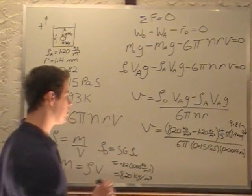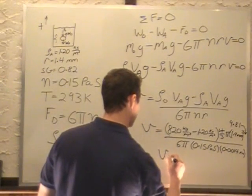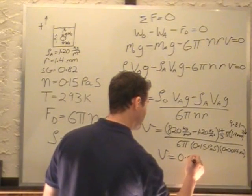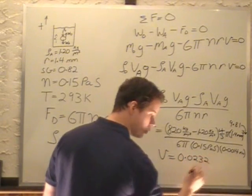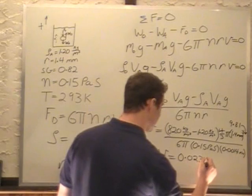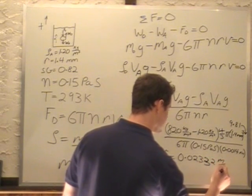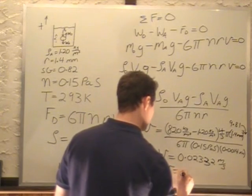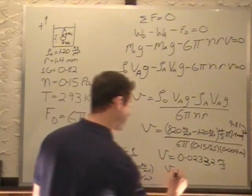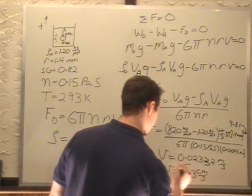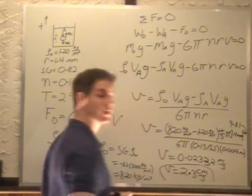So after you plug all these numbers in, you get a velocity of 0.02332 meters per second. Rounding to significant digits gives us 2.3 centimeters per second. That's your final answer.